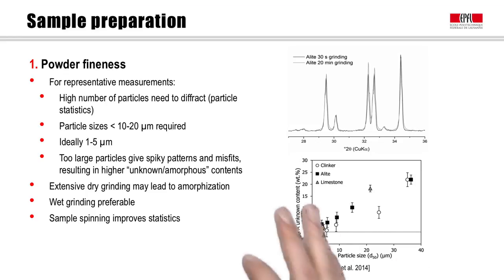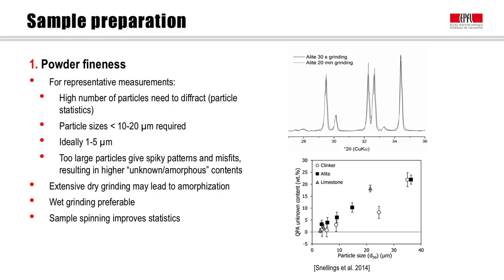In the graphs on the right side, you can see the effect of material fineness on the XRD patterns. On the upper right, you can see two XRD scans of the same material, a synthetic alite, ground for two different times. One was ground for 30 seconds, resulting in a rather coarse alite with a median grain size of about 36 micrometers. The other used a long grinding time of about 20 minutes, resulting in alite particles of about 3 micrometers. You can see that for the longer-ground sample, the peaks are a little broader and more regular mathematically. Having large particles gives a spiky pattern and results in misfits, which leads to larger apparent amounts of unknown or amorphous content.